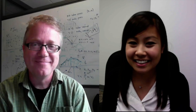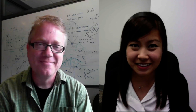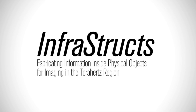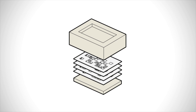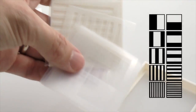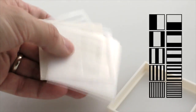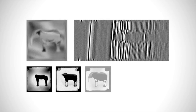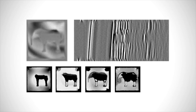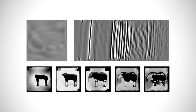Welcome to the Full Spectrum. I'm Davie Alba for IEEE Spectrum. We're here today with Andy Molson from Microsoft Research. He's here to tell us about Infrastructs, a research project that pioneers techniques for reading hidden information in objects. Infrastructs lets you embed binary codes, 3D watermarks, and geometric shapes into 3D printed objects, and then reads it back with terahertz scanning.